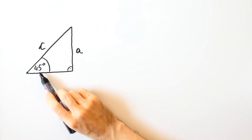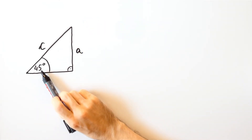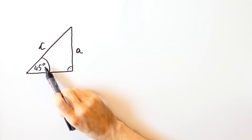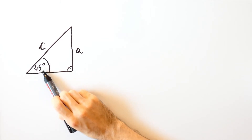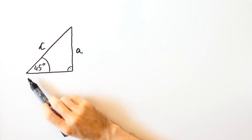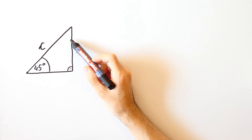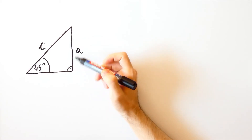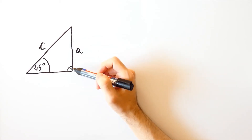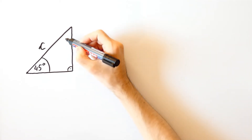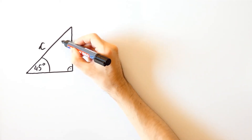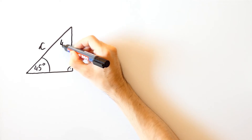Let us now take a look at this particular example where we want to find the sine and the cosine of 45 degrees. Since the sum of angles of a triangle is 180 degrees, then this angle here is also 45 degrees.